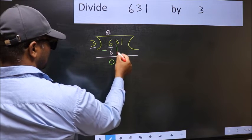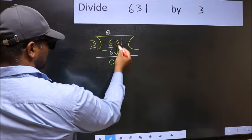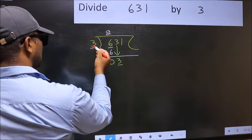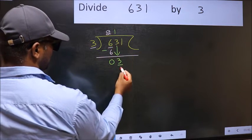After this, bring down the beside number so 3 down. Now 3. When do we get 3 in 3 table? 3 once, 3.